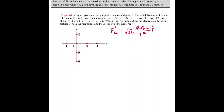All the charges are positive. Charge 1 is +2E, charge 2 is +4E, charge 3 is E, charge 4 is 4E, charge 5 is 2E, charge 6 is 8E, and charge 7 is 6E. Since all charges are positive, they repel each other.